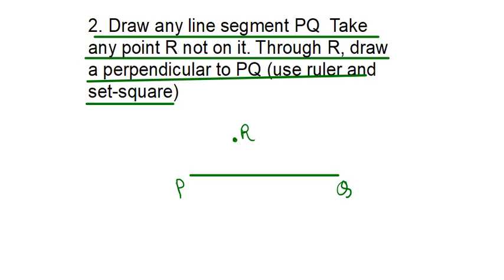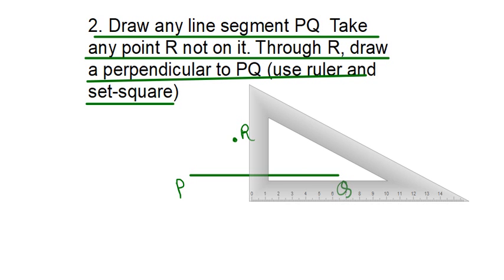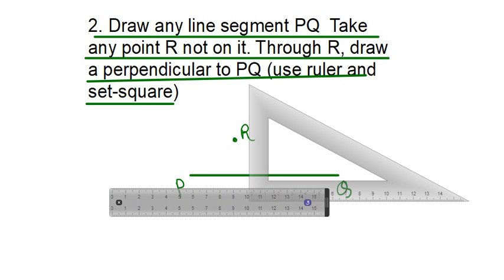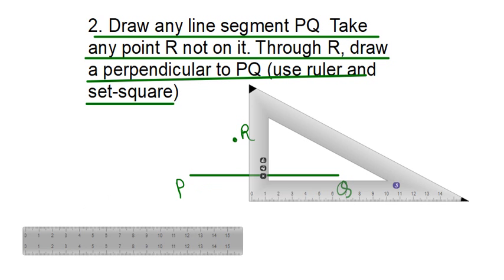Now, once I have taken my point R here, we have to draw a perpendicular to this line segment PQ through this point R. For this, you are going to require a set square and a ruler. This is what you are going to require for this.